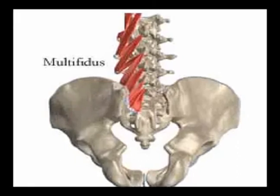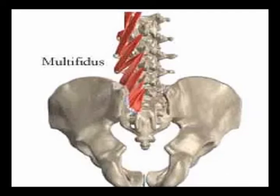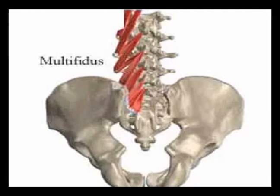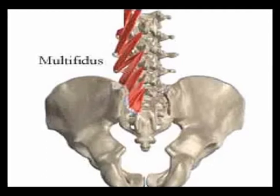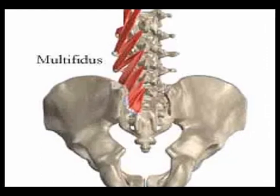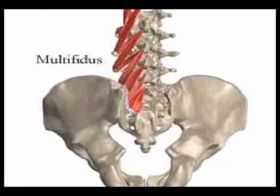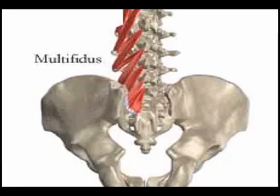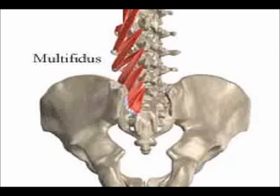The origin of the multifidi muscles in the lumbar region are the mammillary processes. In the sacral region, the origin of the multifidi are the posterior aspect of the sacrum, the aponeurosis of the origin of the sacrospinalis, the medial surface of the posterior superior iliac spine (often abbreviated to the PSIS), and the posterior sacroiliac ligaments.